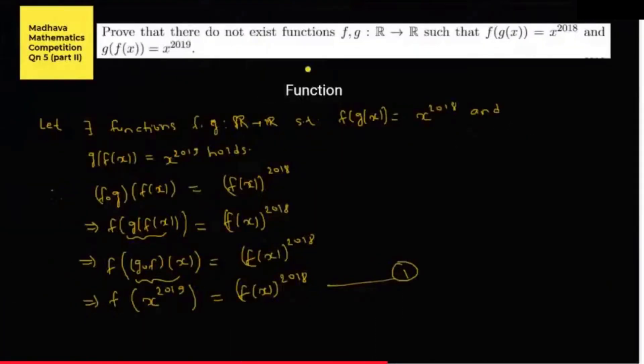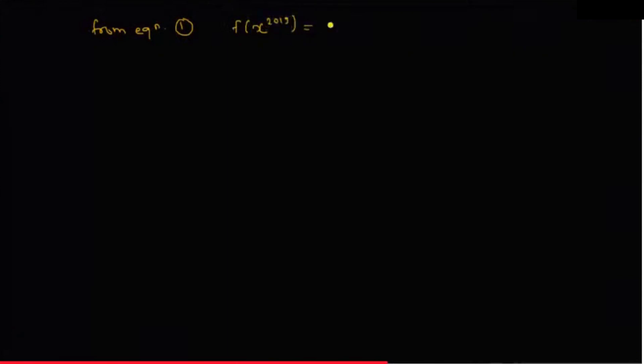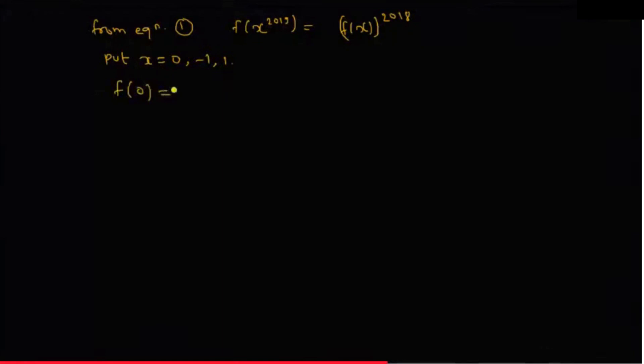From equation one, we had f(g(f(x))) = f(x^2018), and since g(f(x)) = x^2019, this gives f(x^2019) = f(x^2018). Now put x = 0, x = -1, and x = 1. For x = 0: f(0^2019) = f(0^2018), so f(0) = f(0^2018). For x = -1: f(-1) = f((-1)^2018), since -1 to an odd power is -1.